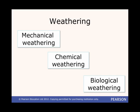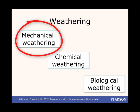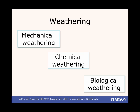Weathering is another process that helps shape the coastline. Weathering breaks down the rock in different ways and erosion then removes the material. Mechanical weathering is one type of weathering — salt crystals from seawater can grow in cracks in rock, weakening the rock.